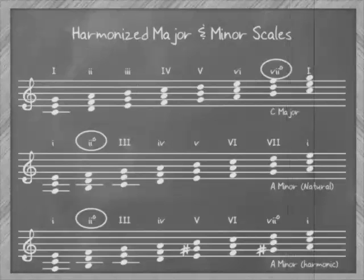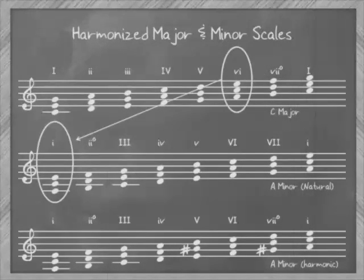The order of major, minor, and diminished chords is the same for every major scale. It's also the same for the natural minor scale, except that it starts on the minor sixth chord of the relative major.